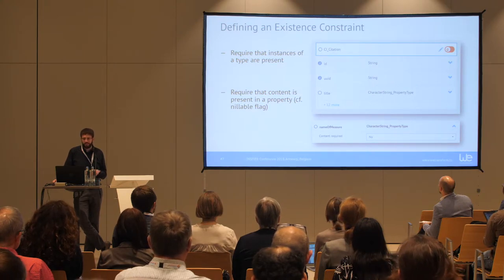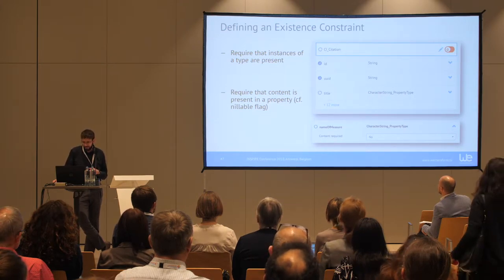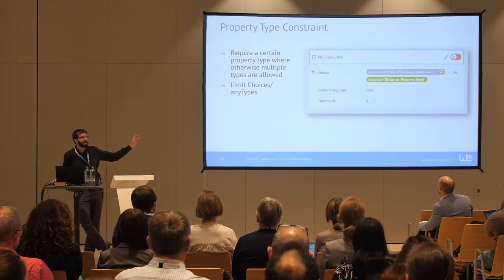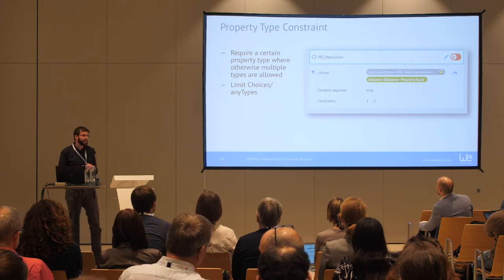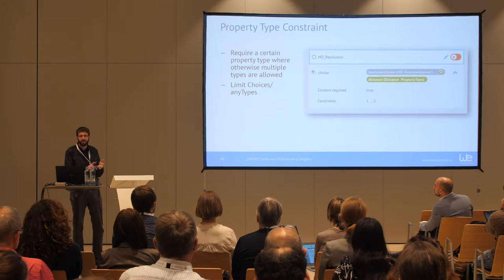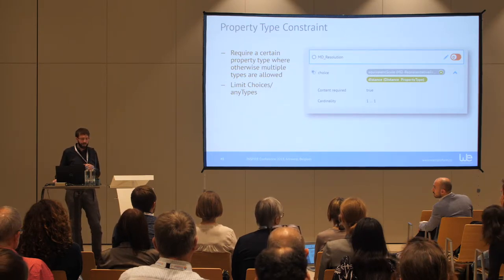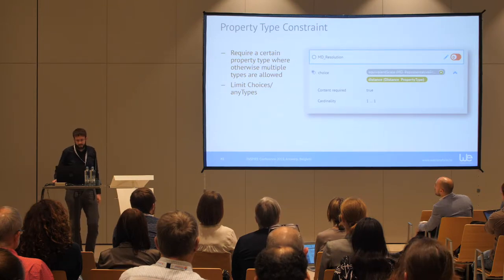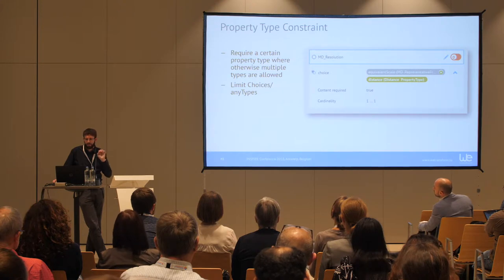It's also possible to define that content for a certain property is required — equivalent to the nilable flag. There are also property type constraints. For example, we often have choices in INSPIRE metadata and data models. To simplify things and improve interoperability, it's useful to constrain down to one option — for example, we expect MD resolution to always be expressed as a distance, not as an equivalent scale. In a profile, you always constrain things rather than add something; you limit how things can be used.